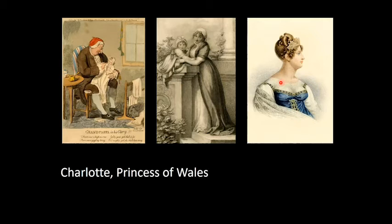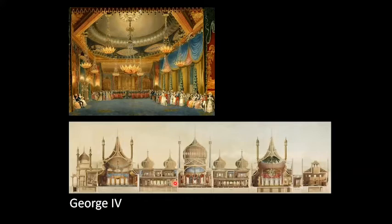Charlotte was again a queen who never was, and on her death George the Fourth had no further legitimate surviving children and therefore no direct heir. George the Fourth was very interested in art and architecture — he collected many important paintings, built the Royal Pavilion at Brighton, and renovated Windsor Castle and Buckingham Palace. He was very fond of pageants and parties and ran up huge personal debts, which had to be paid off with grants voted by Parliament.